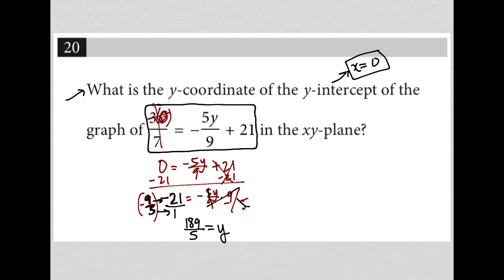I cannot simplify that. 5 does not go into 189. There's no common factor here between 189 and 5. So that's it. That is my answer. y is equal to 189 fifths.